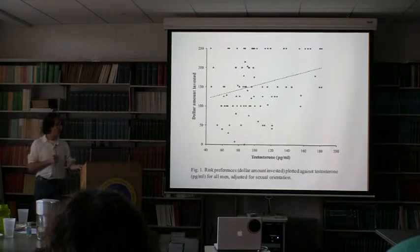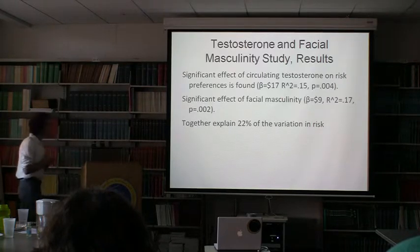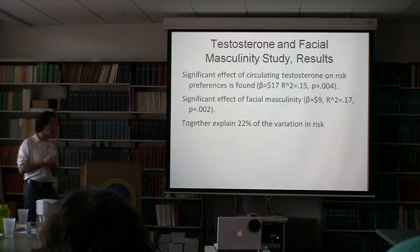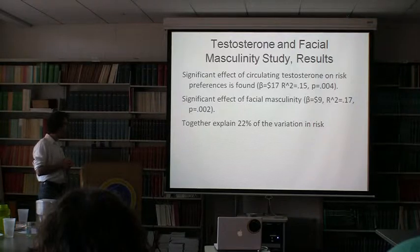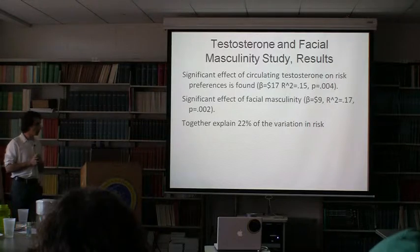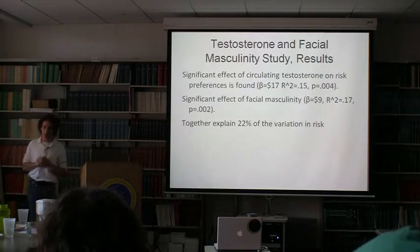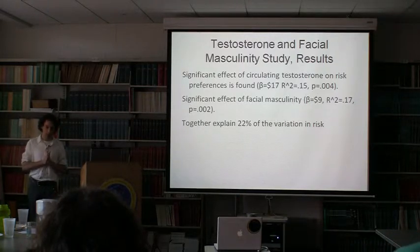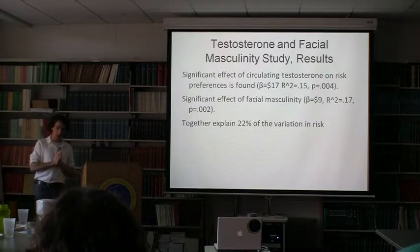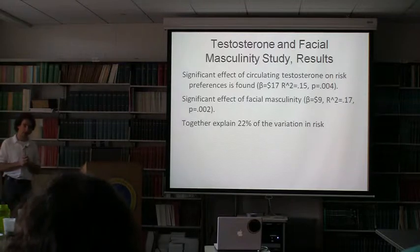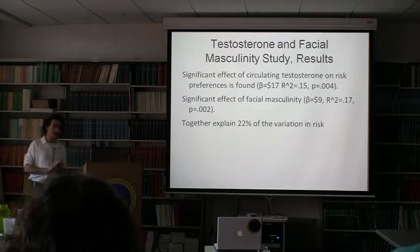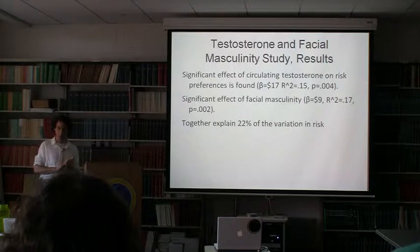Looking at facial masculinity on the x-axis and risk preferences on the y-axis, there is a significant correlation — those with more masculine-like faces invest more in the risk measure. For testosterone, there is also a significant correlation. Going up one standard deviation of testosterone makes you invest about $17 more; facial masculinity one standard deviation makes you risk about $9 more. The R-squared for just testosterone is 15%, for facial masculinity is 17%, and combined it's 22% — quite high, given that most other known variables aside from gender explain less than 5% of the variation in risk preferences.